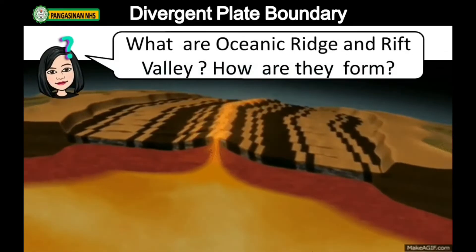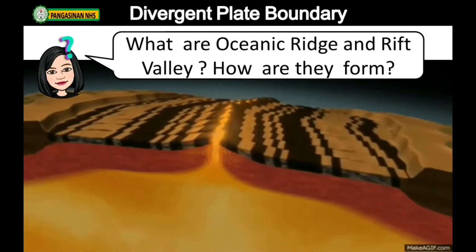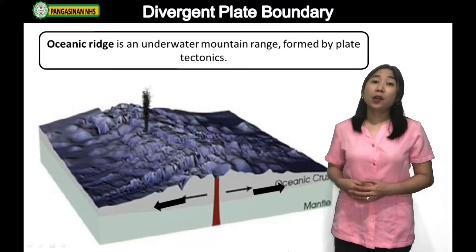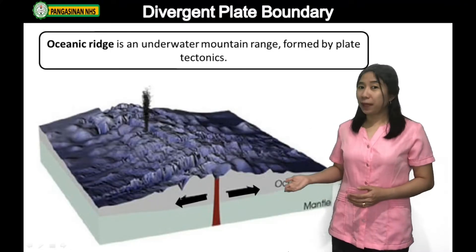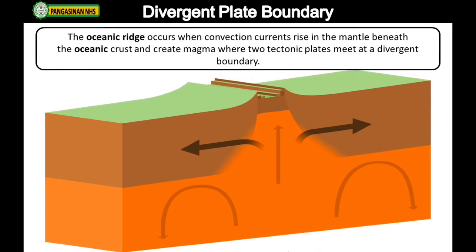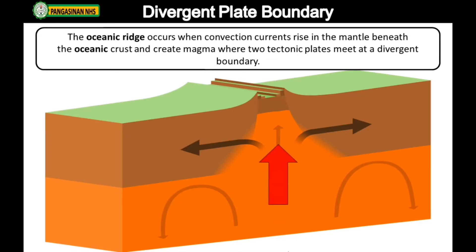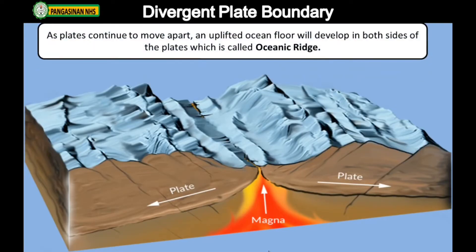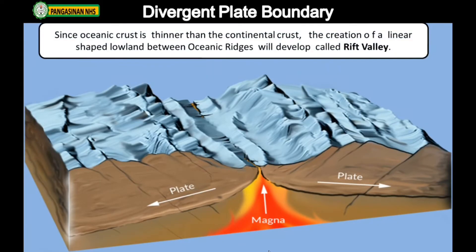What are oceanic ridge and rift valley, and how are they formed? Oceanic ridge is an underwater mountain range formed by plate tectonics. It occurs when convection currents rise in the mantle beneath the oceanic crust and create magma where two tectonic plates meet at a divergent boundary. As plates continue to move apart, an uplifted ocean floor develops on both sides, called the oceanic ridge. Since oceanic crust is thinner than continental crust, a linear-shaped lowland between oceanic ridges develops, called the rift valley.